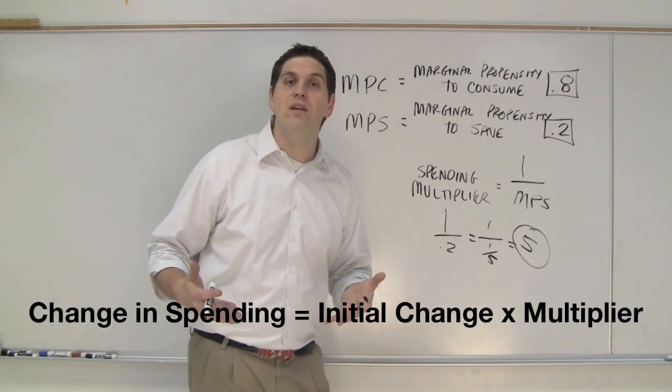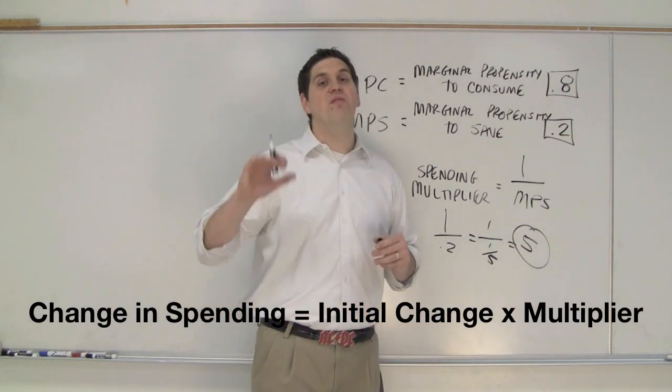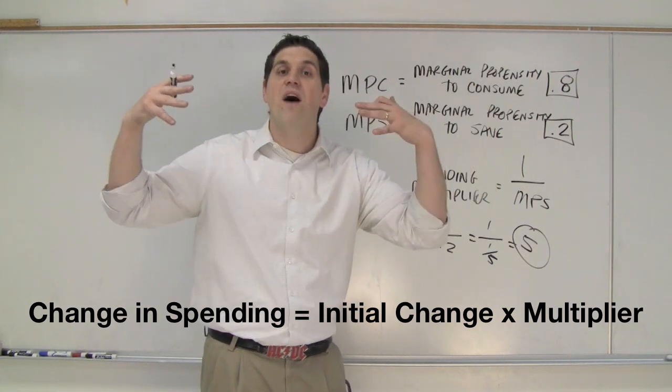Well, if the government spends $100 million, that will get multiplied times 5 when it gets multiplied times other people to become $500 million.